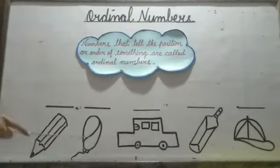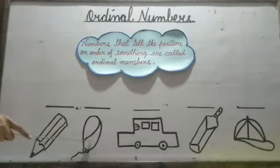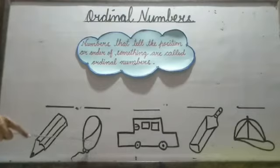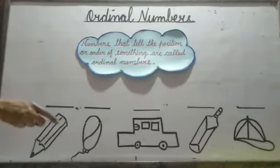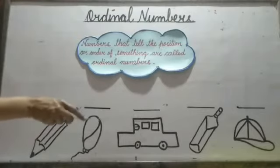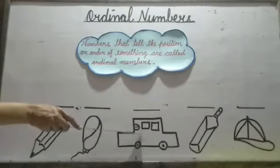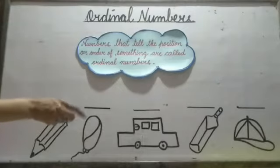The next picture is Balloon. What is the position of Balloon? Balloon is at the second position. Next is Car. Car is at the third position. So, the position of Car is third.